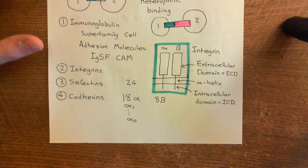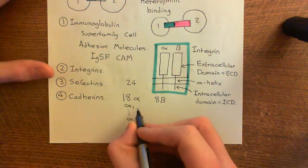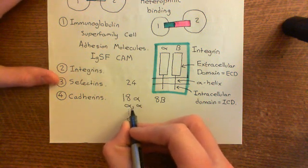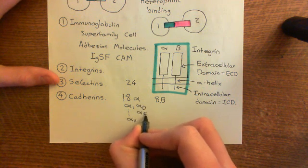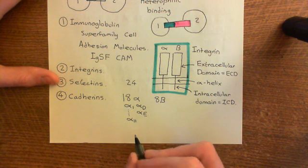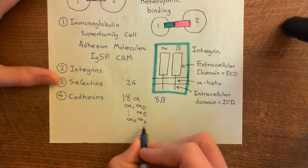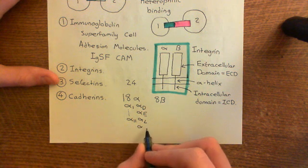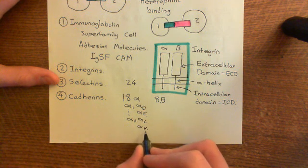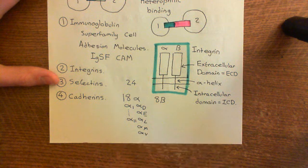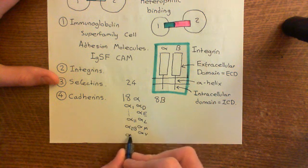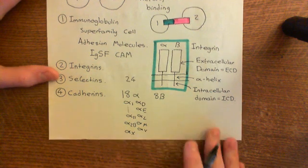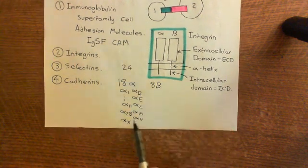The final seven alpha subunits are named with letters rather than numbers: alpha D, alpha E — and rather than following the alphabet, they skip to alpha L, then alpha M, then alpha V, alpha 2B, and finally alpha X.